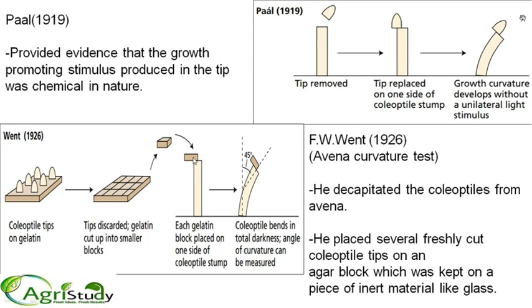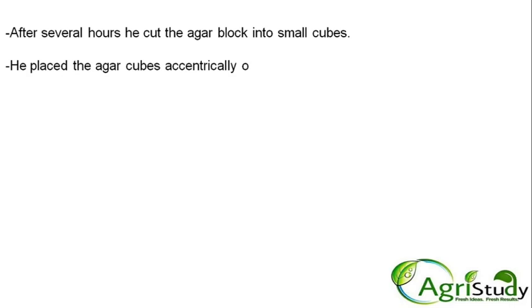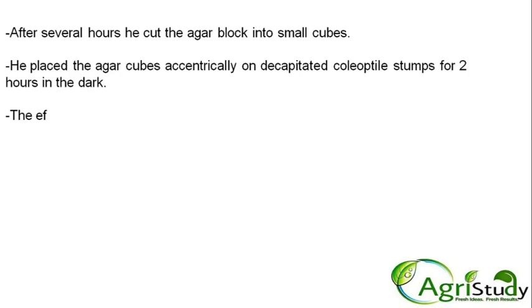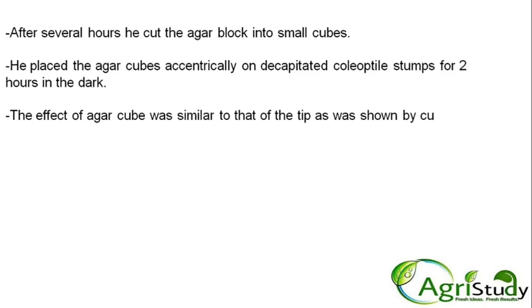The auxin accumulated in the agar block because it moved from the coleoptile tip into the agar. When these blocks containing auxin are placed on one side of the decapitated stem, the stem bends because there is no auxin on the other side — they automatically bend when exposed to this asymmetric auxin distribution. The effect of the agar block was similar to that of the intact tip, as shown by the curvature of the coleoptile being similar to normal conditions.